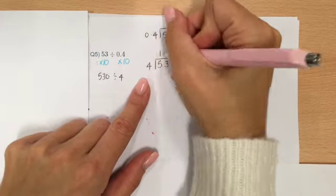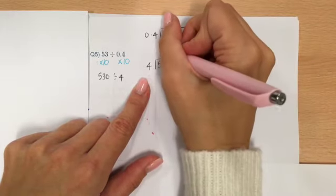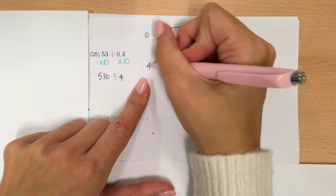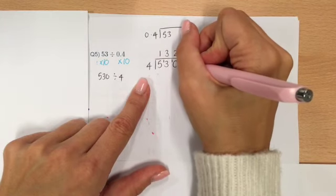How many 4s are in 5? Well, there's 1 with a remainder of 1 left over. How many 4s are in 13? There are 3. 4 times 3 is 12, so there's a remainder of 1. 4 into 10 goes twice with a remainder of 2.